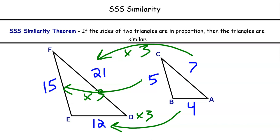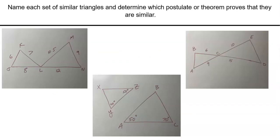So, three ways to prove triangles similar: the angle-angle similarity postulate, the side-angle-side similarity theorem, and the side-side-side similarity theorem. Two are familiar from congruent triangles; one is new and specific to similar triangles. Now pause the video, name each set of similar triangles in the three diagrams below, and determine which postulate or theorem proves they are similar. Come back when you're ready to see the answers and move on to one more example.